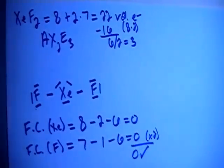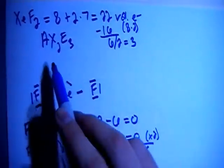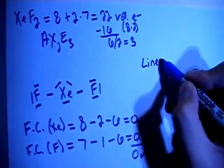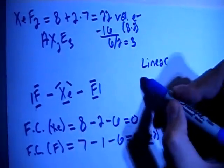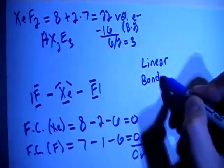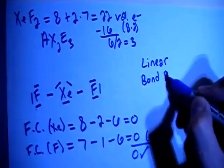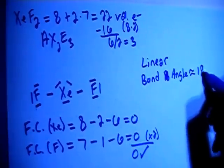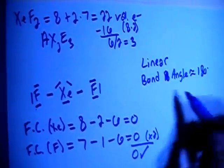Now let's go ahead and talk about the shape, AX2E3. This is going to be a linear shape, and with a linear shape, the bond angle is going to be approximately 180 degrees, straight across.